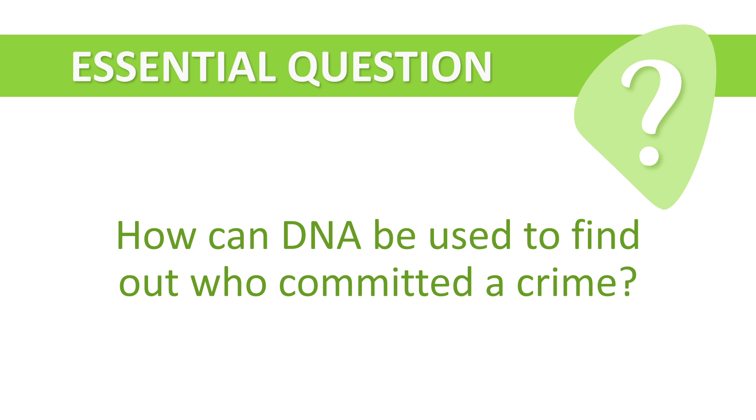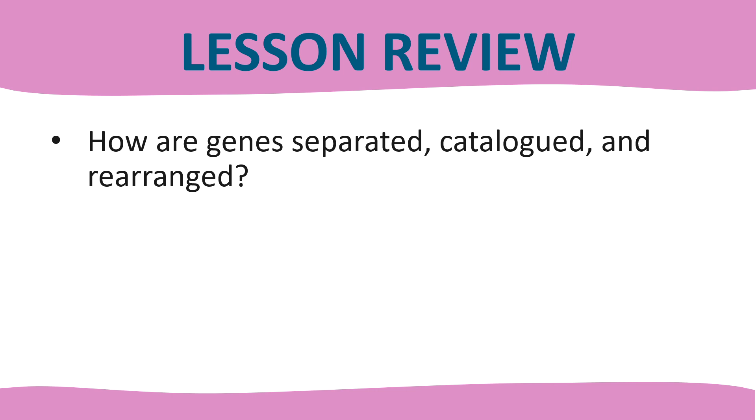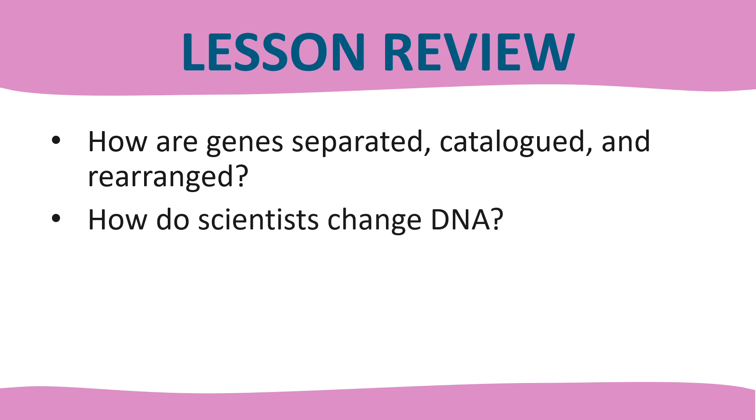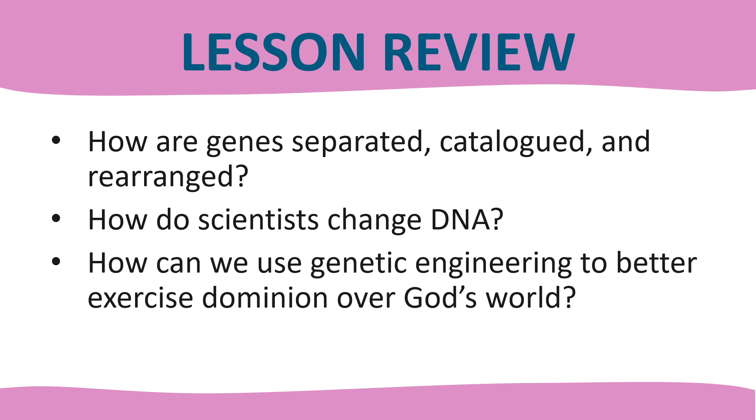In conclusion, we can see that God has given us DNA, which is not just necessary for life, but also useful as a tool that can be used to better have dominion over God's world if properly used with restraint and caution. This lesson we learned a little bit about how DNA can be used to find out who committed a crime — by examining sequences of DNA left behind at crime scenes, which are then analyzed using electrophoresis. This process sorts DNA fragments by size and stains them to create banding patterns that are as unique to individuals as fingerprints. We also learned how genes are separated, catalogued, and rearranged, and how scientists are able to change DNA. And lastly, we learned that genetic engineering can be used to better exercise dominion over God's world if done with great caution and restraint.